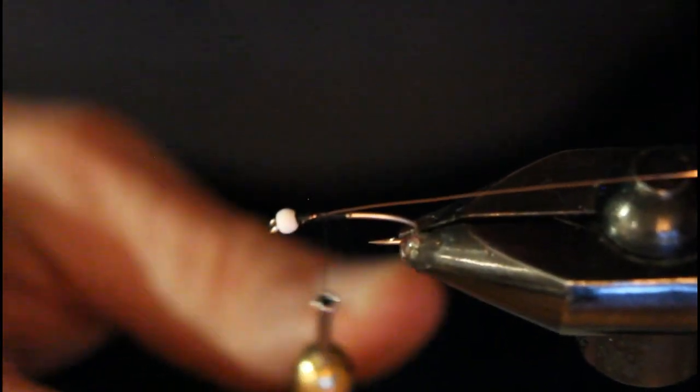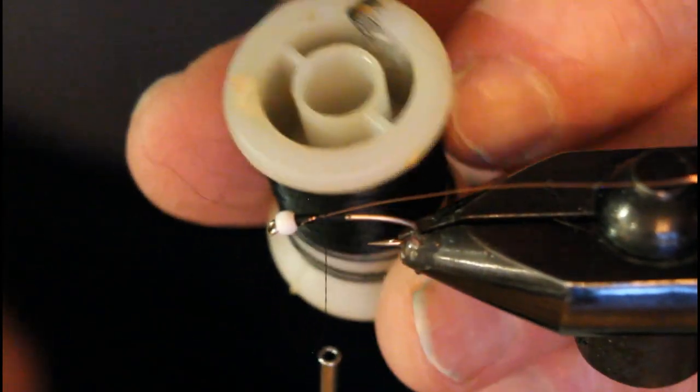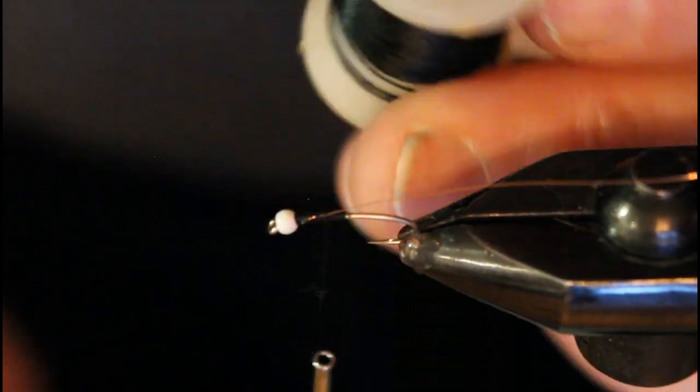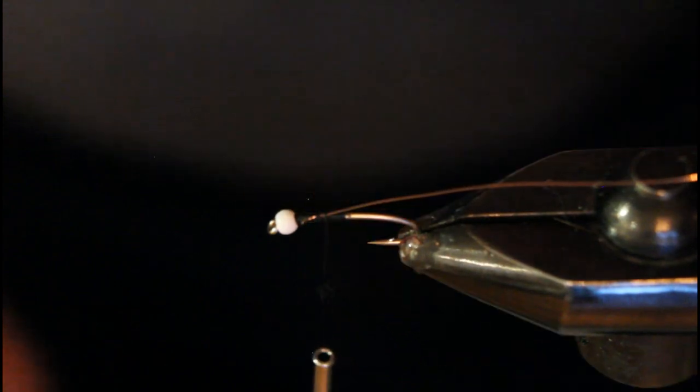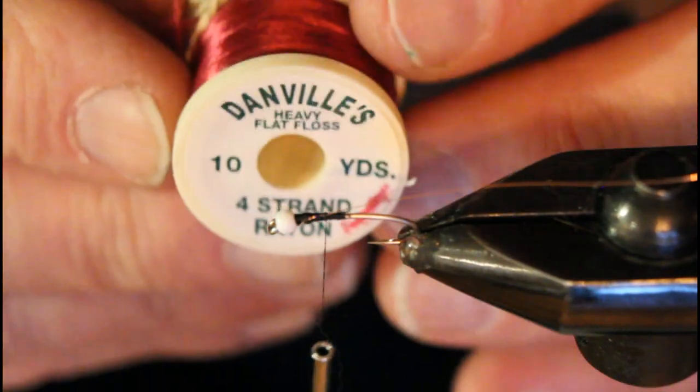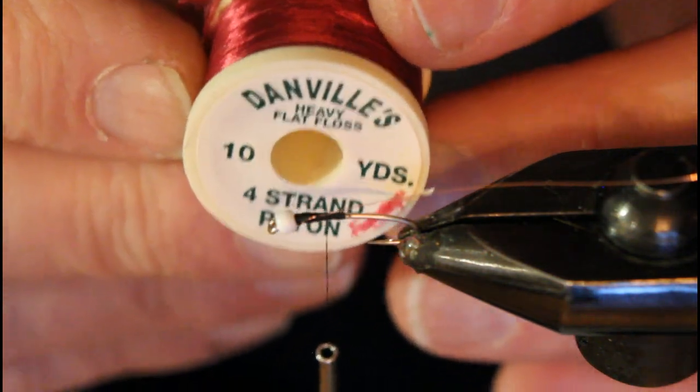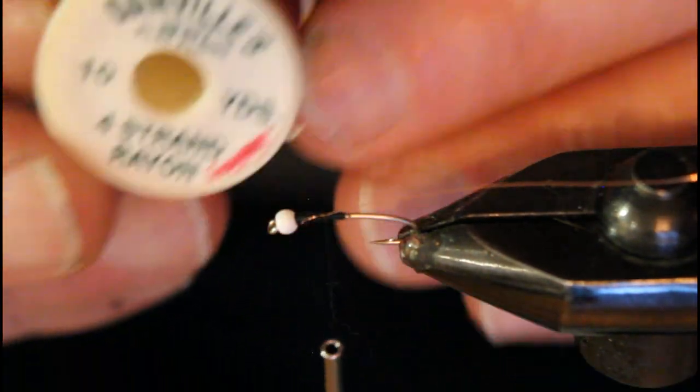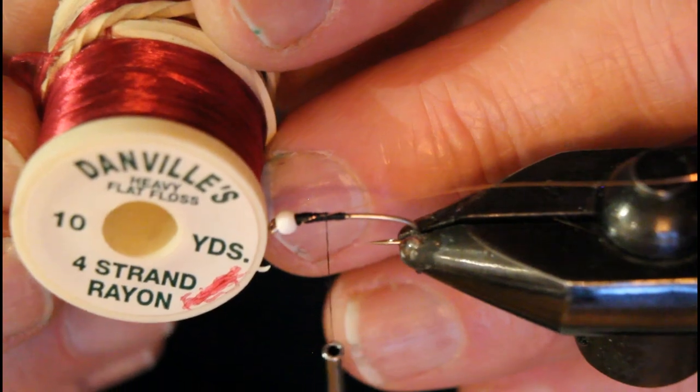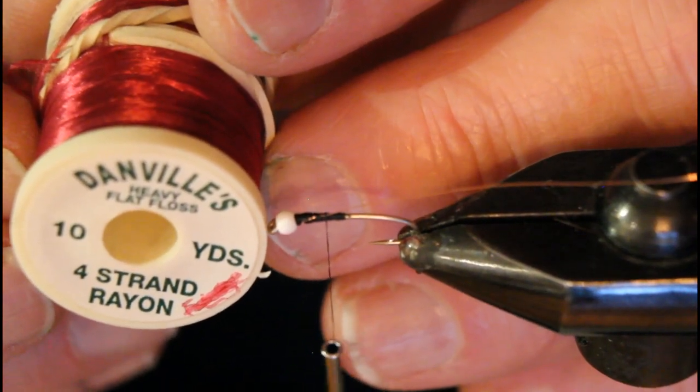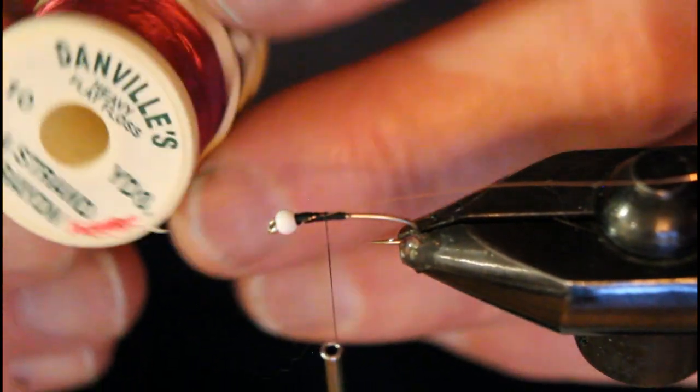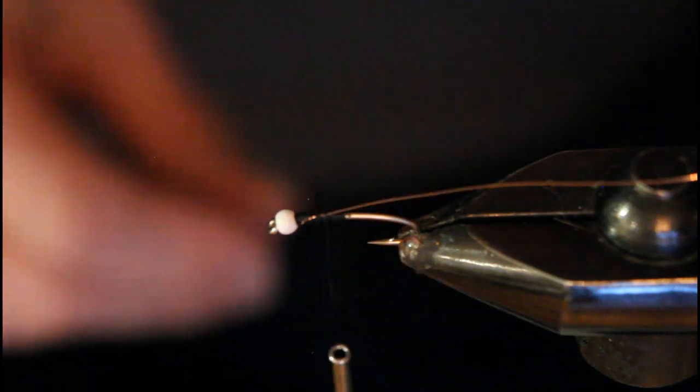Just about here, we're going to be using some black rayon floss. It's four-strand floss, Danville's. I've had these for many years. I'm showing you the burgundy because the label came off my black one, my Danville's four-strand rayon floss. That's all we used back then.